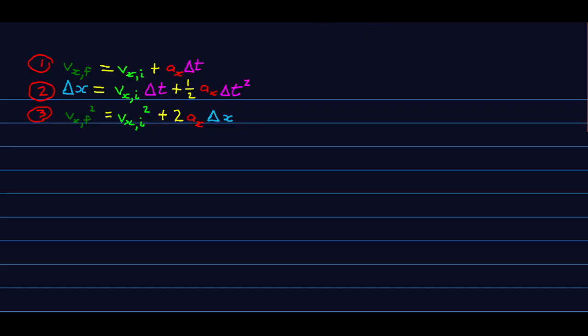There's a key feature of these equations which leads to a general strategy for solving problems. So I've color-coded them so that you can see that there are four variables in each of these equations, and that means if you know three variables, you can find a fourth if you just pick the right equation, and there's our general strategy.